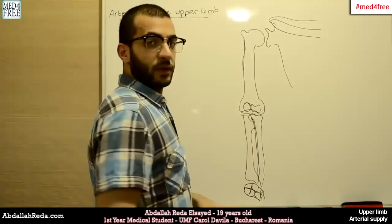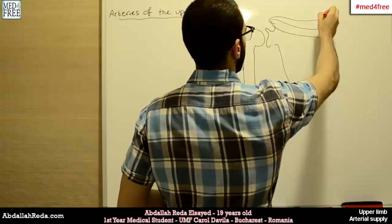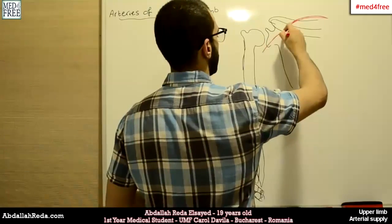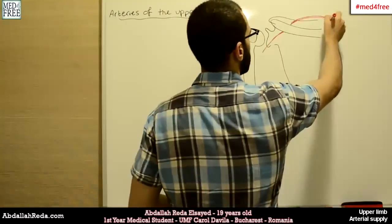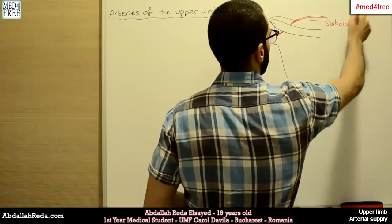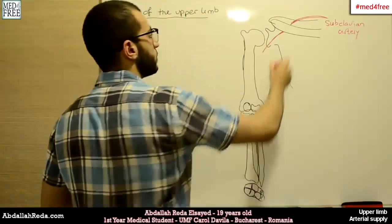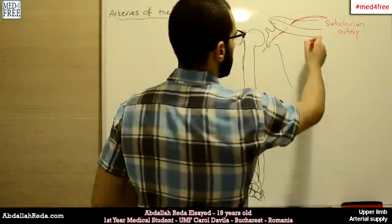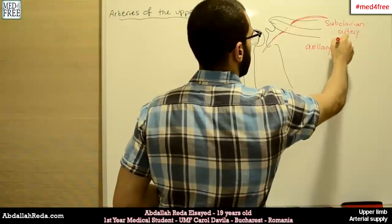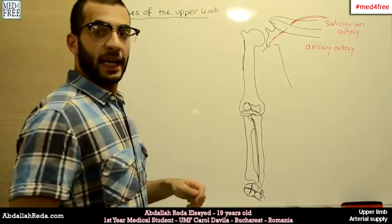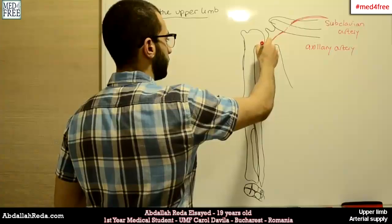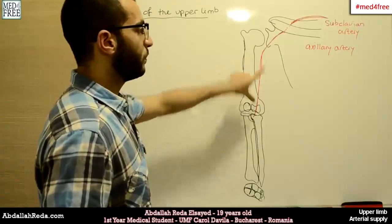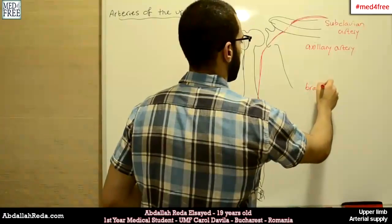So it begins with the subclavian artery. The subclavian artery goes like this and then it passes behind the clavicle and goes into the axillary region. When it goes into the axillary region, it's called the axillary artery. Then it leaves the axilla and goes into the brachial region — the arm — and at that point it becomes the brachial artery because it's in the brachial region.